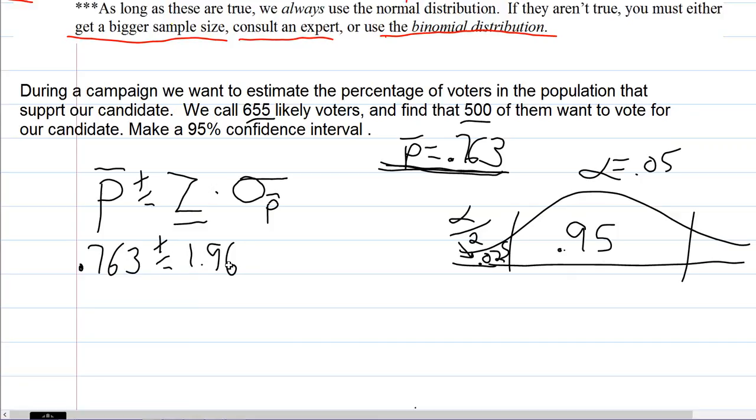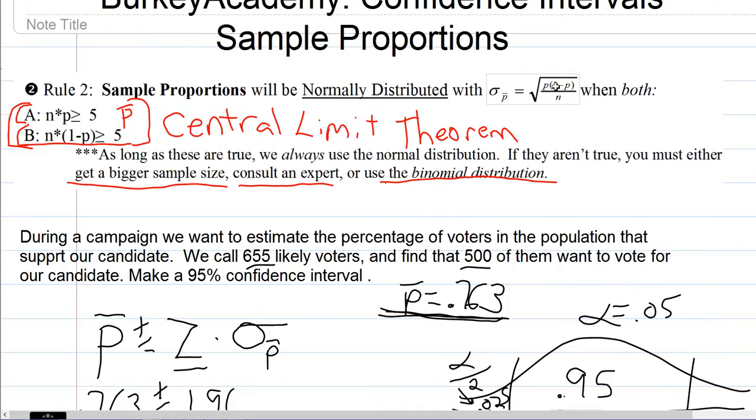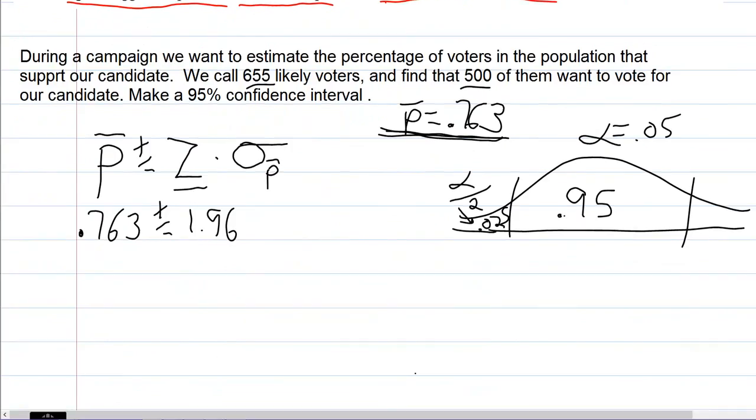Then we need to know the standard error. Our standard error formula, as it says in rule 2, is the square root of p times 1 minus p over n. Technically speaking we want the population proportion there, but we don't know the population proportion. So we're going to use the best thing we've got, the sample proportion. We're using a sample estimate to calculate this standard deviation here.